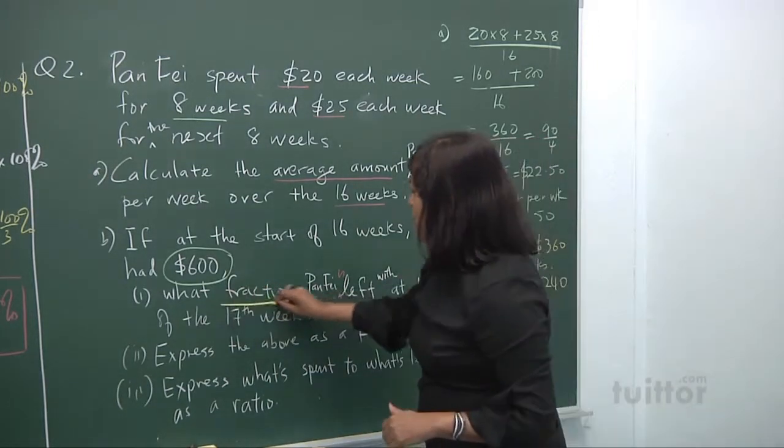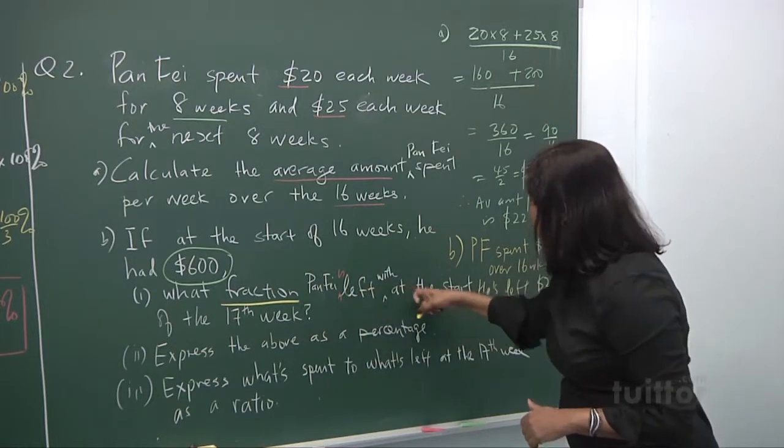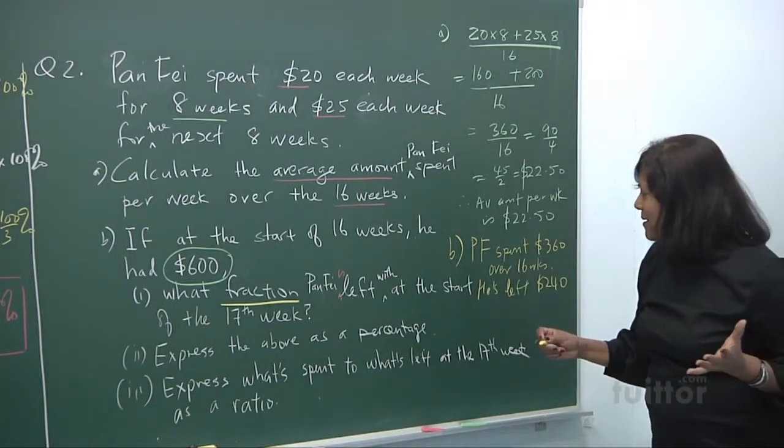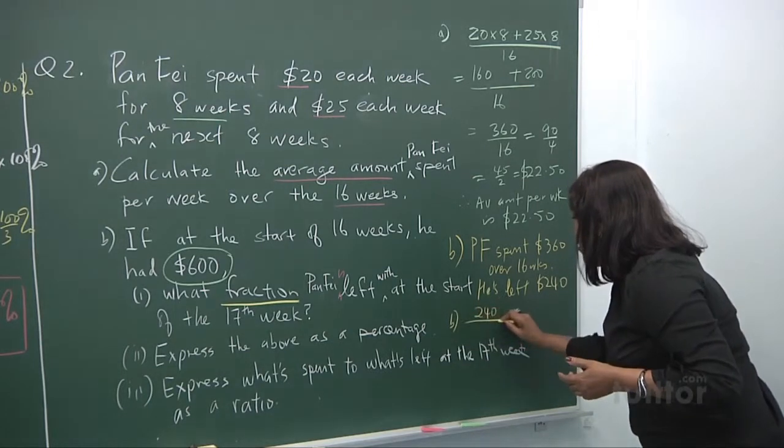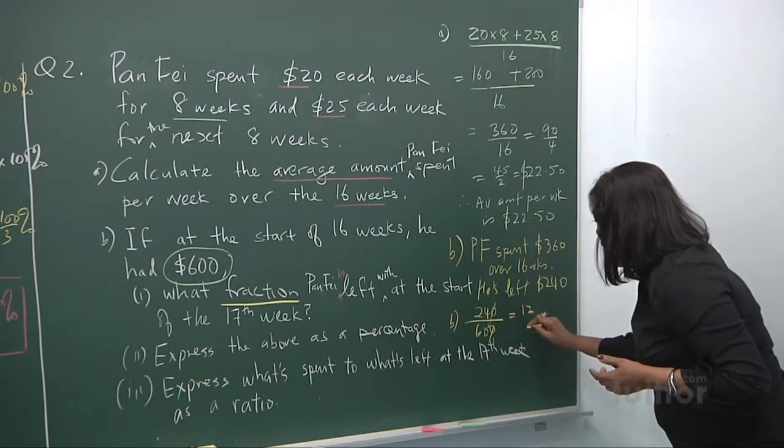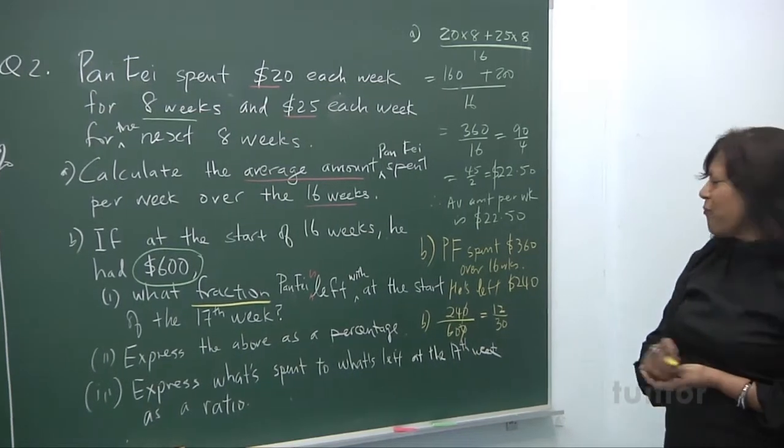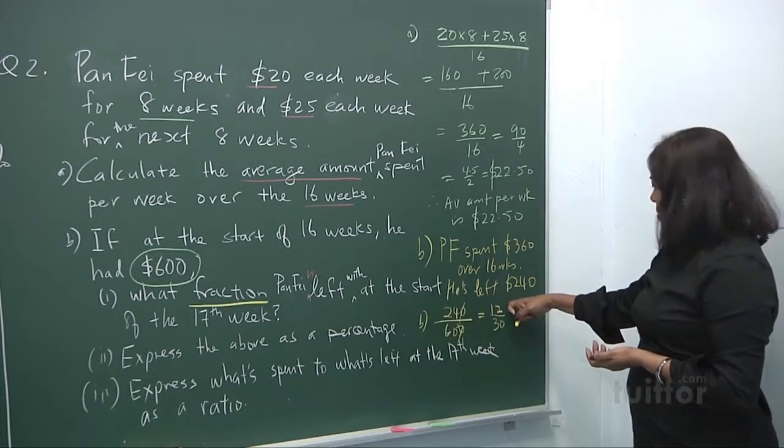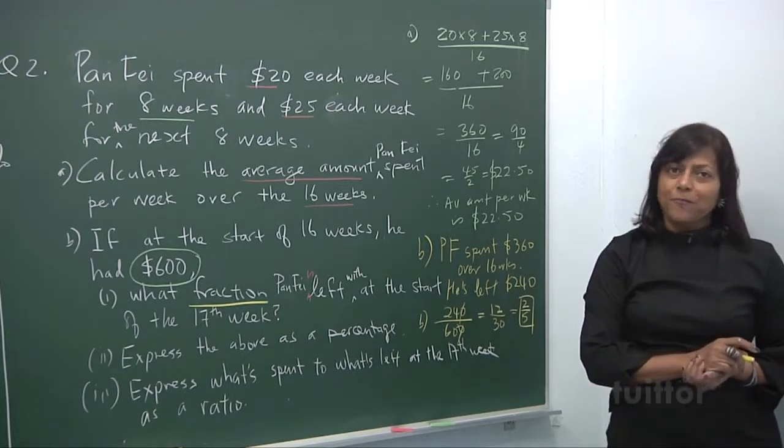Now, they want you to express it as a fraction. Okay? What fraction of Pan Fei is he left with at the start of the 17th week? You're left with 240 out of 600 dollars. So the answer is, alright? What's the answer? Please tell me. 240 over 600. Yep. Cancel. Divide. You get 24 over 60. You can divide by 2, 12. Never mind. I divide by 2. I get 12 over 30. And actually, I could have divided by 12 so fast. You get 2/5. Divide by 12, you get 2. Divide by 12, you get 5. But never mind. We divide by 2. Alright? You get divide by 6 again. You get 2. And that's your answer. He's left with 2/5 of the start amount.